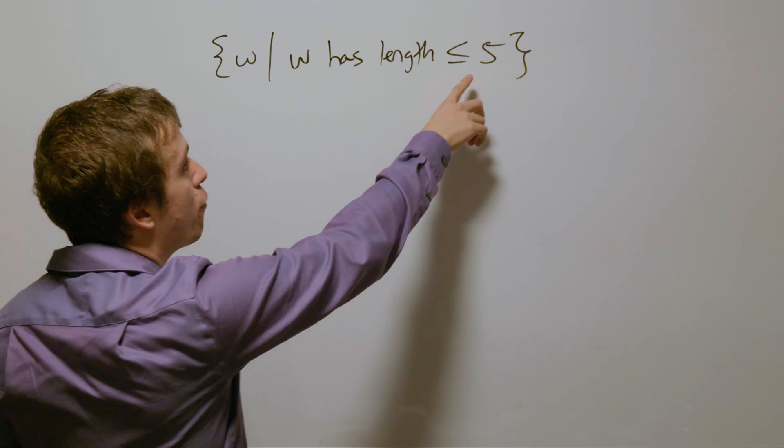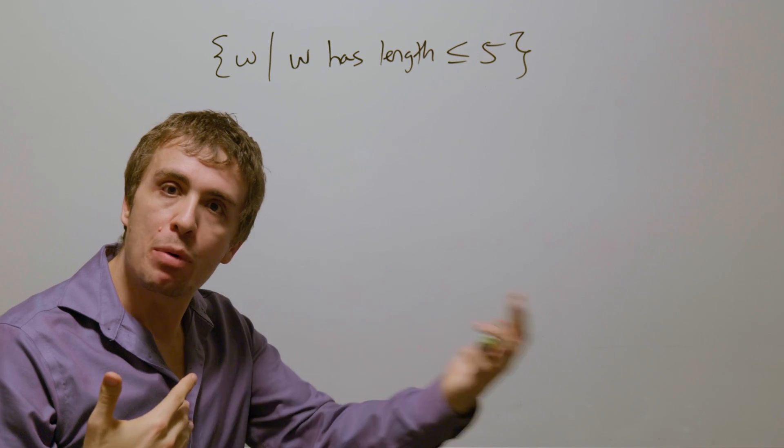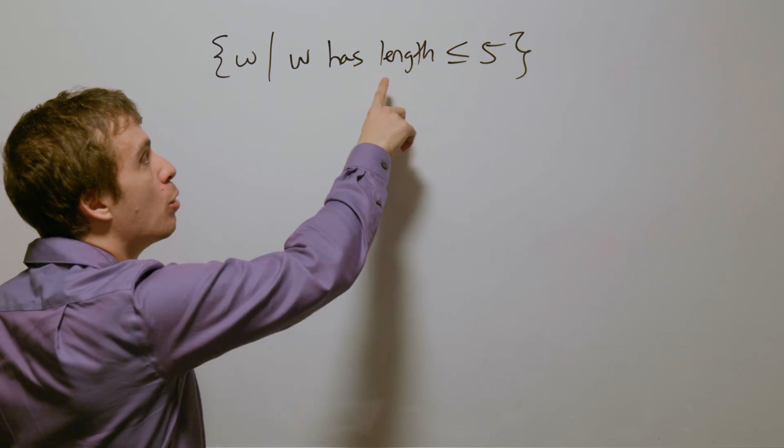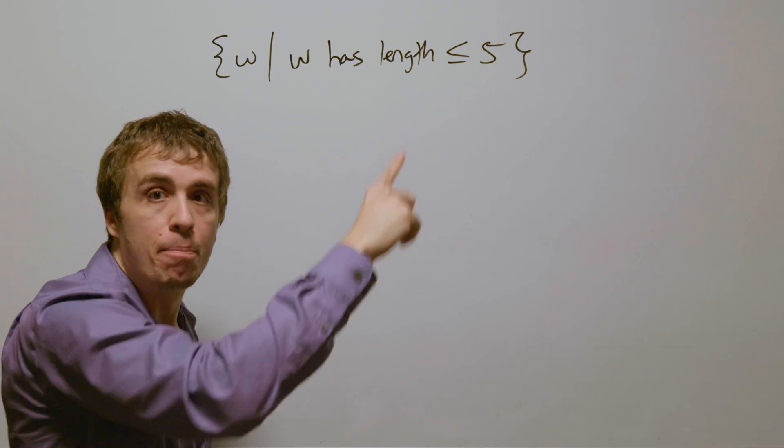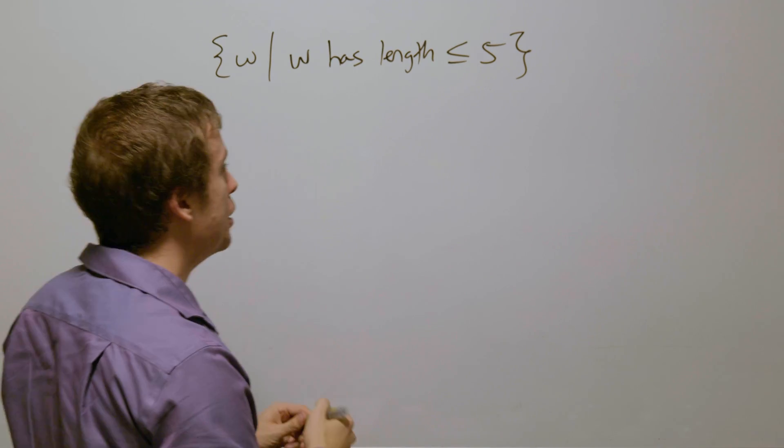So how are we going to build a DFA for this? Well, once we have reached length 6, then no matter what we read after the fact, that's not going to result in being back in this language. And so therefore, we need to have a whole bunch of states in a row,